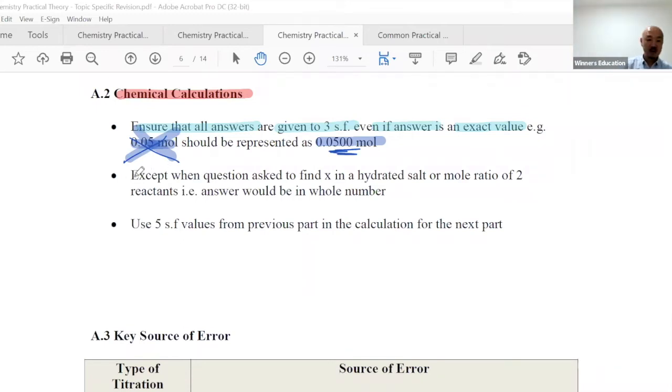Exception: when the question asks to find x in a hydrated salt or mole ratio of two reactants, the answer must be a whole number. X number of H2O must be 1, 2, 3, 4, or 5 - it cannot be 1.2 or 1.3, that doesn't make sense. Use common sense and round up.